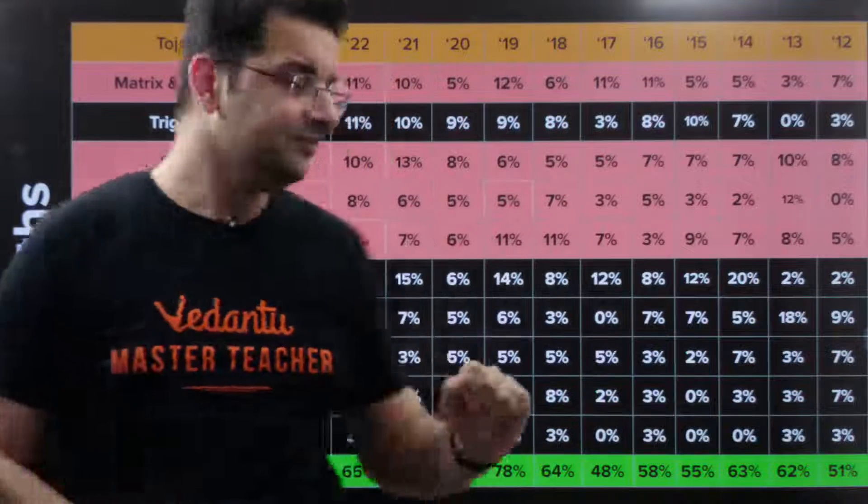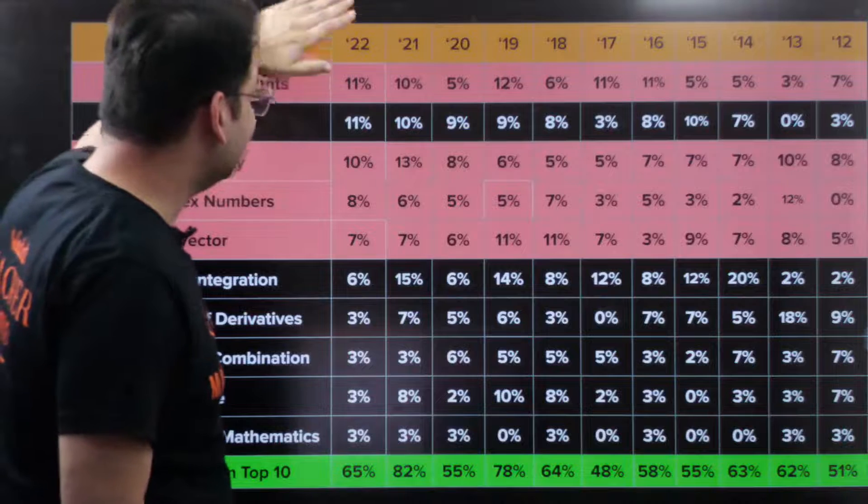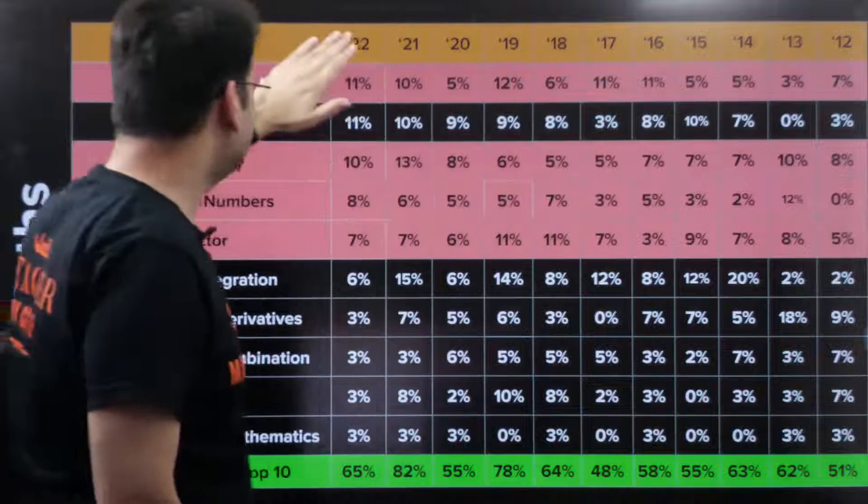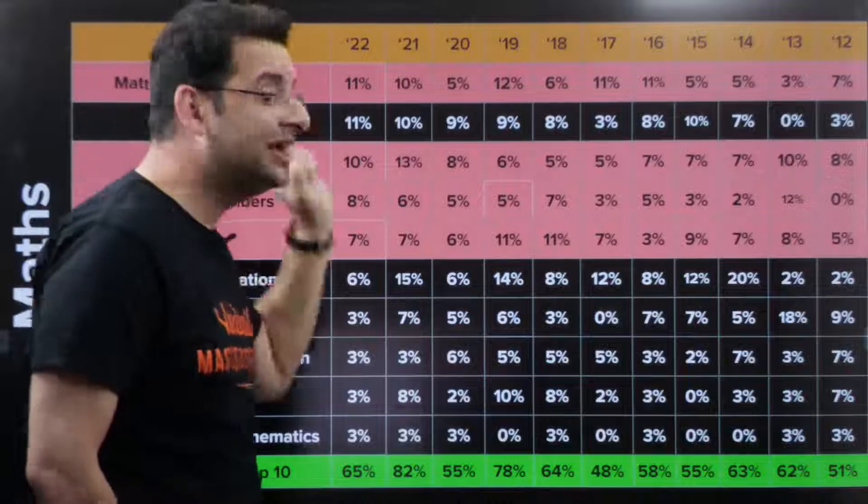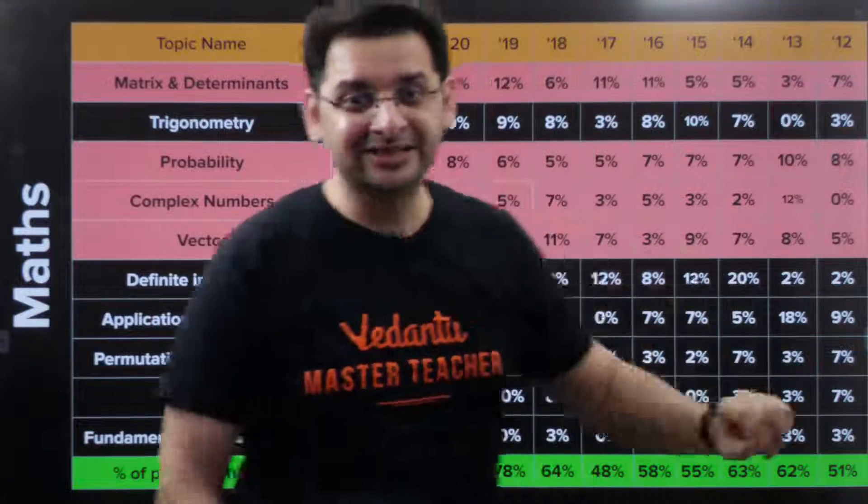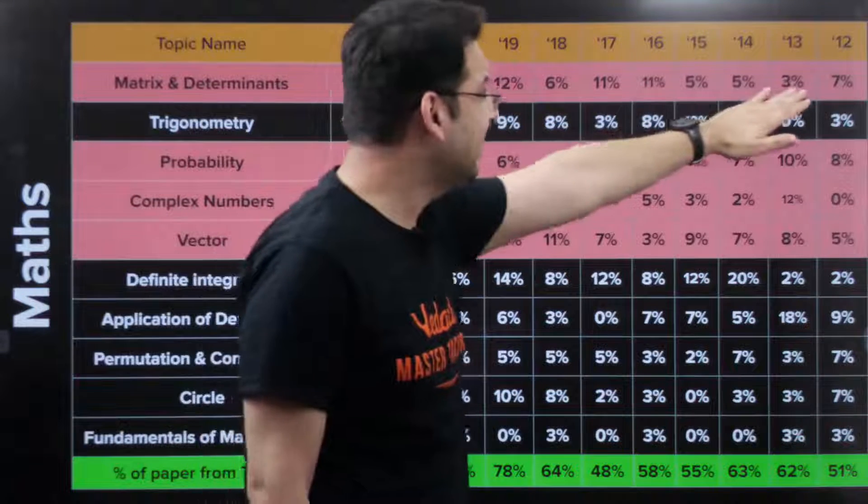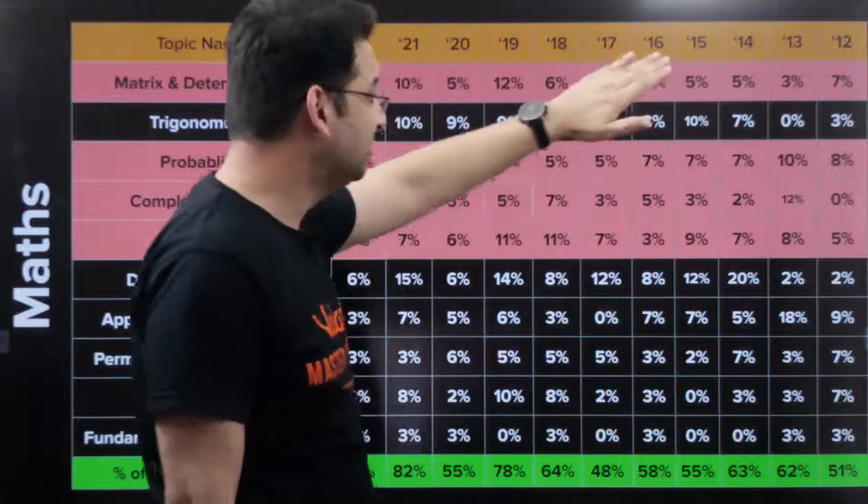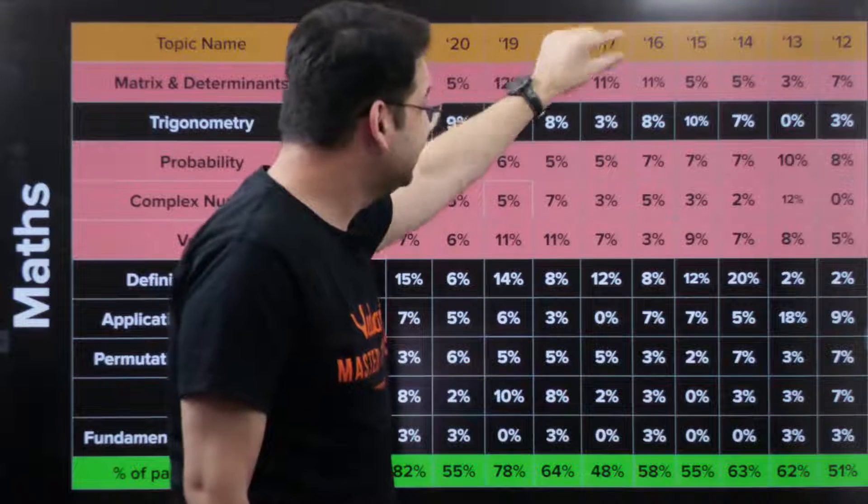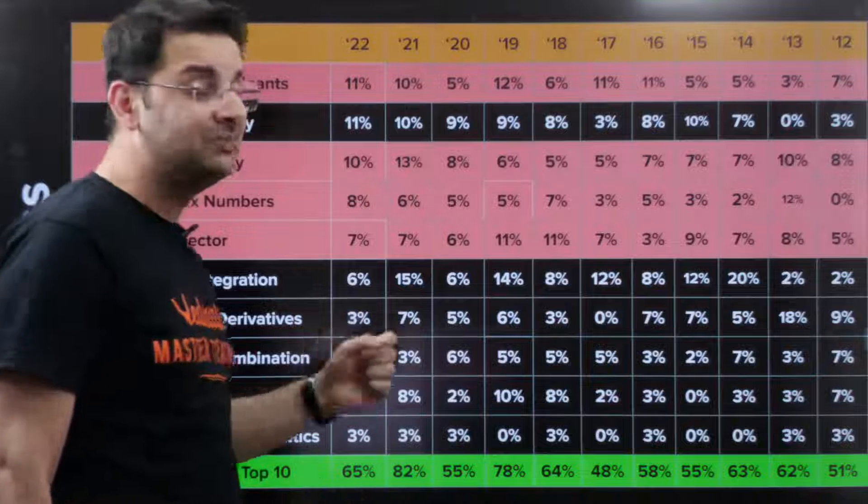So 11 percent from that perspective is huge. Any chapter which is contributing more than 5 percent is a huge weightage. If we talk about matrices and determinants from 2012 to 2022, the weightage has been very, very high. This is the first chapter we do in class 12th and it has such a high weightage. 7 percent in 2012, 3 percent in 2013, 11 percent in 2016, 12 percent in 2019, 10 percent in 2021, and last year it was 11 percent.